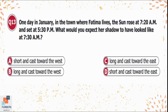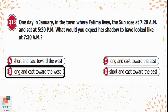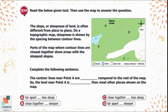Question 13: In January in the town where Fatima lives, the sun rises at 7:20 a.m. and sets at 5:30 p.m. What would her shadow look like at 7:30 a.m.? Shadows are longer in the morning and evening and shorter at noon. Since it is 7:30 a.m., the shadow will be long. The sun rises from the east, so the shadow is cast in the opposite direction — towards the west. Option B is correct: her shadow will be long and cast towards the west.